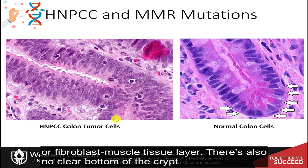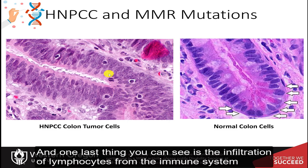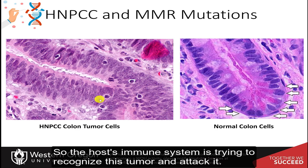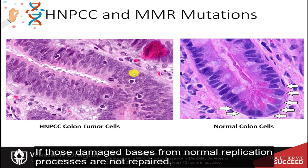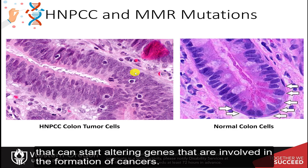There is no clear bottom of the crypt as in the normal tissue, and you also don't see a well-defined basement layer separating the under-tissue from the epithelial layer — it starts meshing together. You can see that epithelial cells may be starting to escape into the surrounding fibroblast and muscle tissue layer. There is also infiltration of lymphocytes from the immune system into the area, trying to respond to this damage — the host's immune system is trying to recognize this tumor and attack it. Overall, this highlights the importance of mismatch repair.